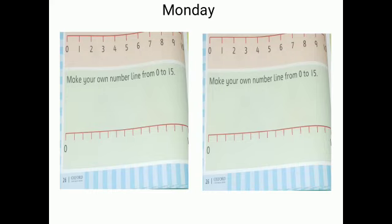Open your book, page number 26. This is a number line. You will count one step forward, after that you will count one step backward. It means 0 to 10. After that, make your own number line from 0 to 15.